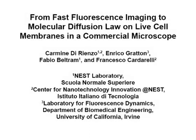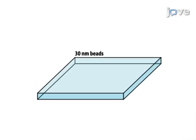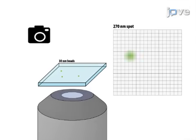The overall goal of this procedure is to measure the diffusion law of lipids and proteins in live cell membranes. To do this, first the point spread function of the microscope is calibrated by imaging nanoscopic fluorescent beads.